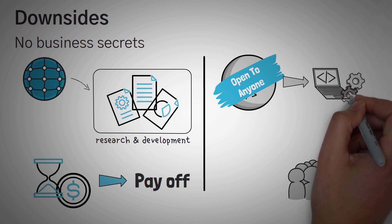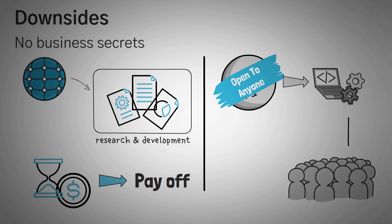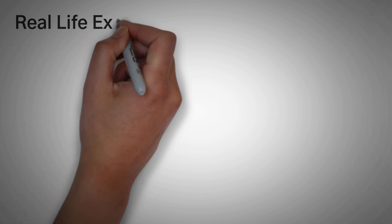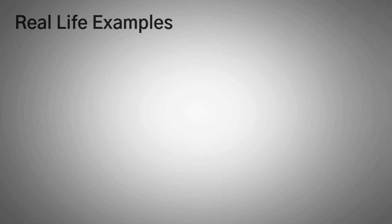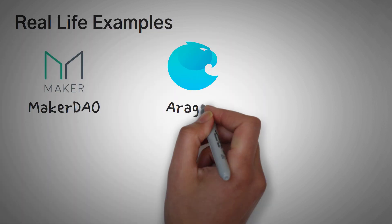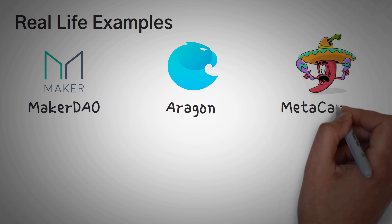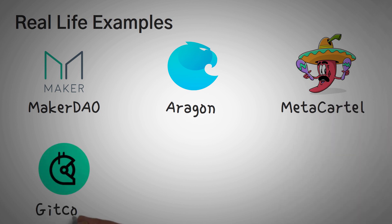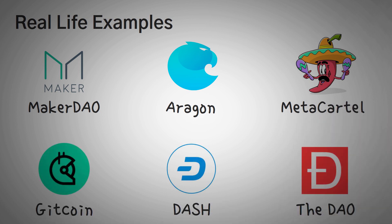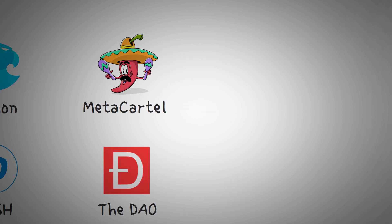So far we've gone over a lot of the theoretical stuff of how a DAO should work. Are there any real life examples? Yes, here are a few: MakerDAO, Aragon, MetaCartel, Gitcoin, Dash, and the famous THE DAO.